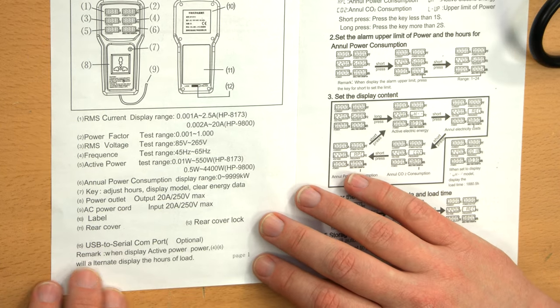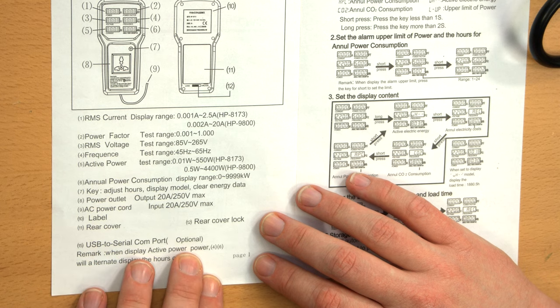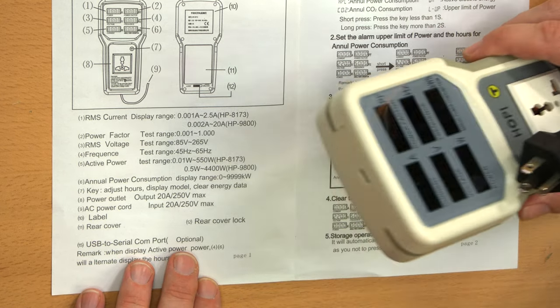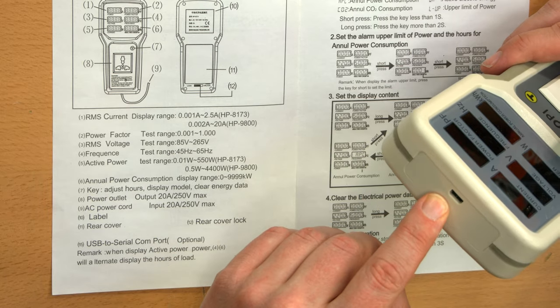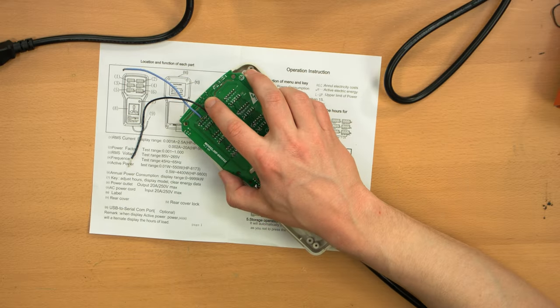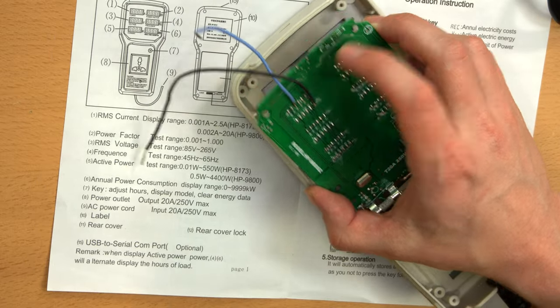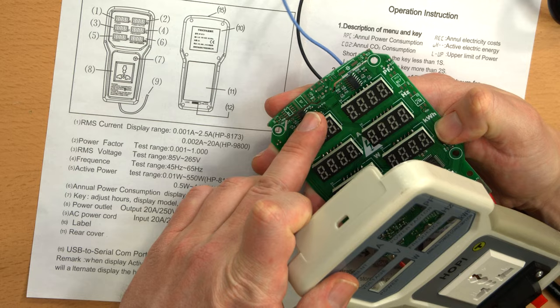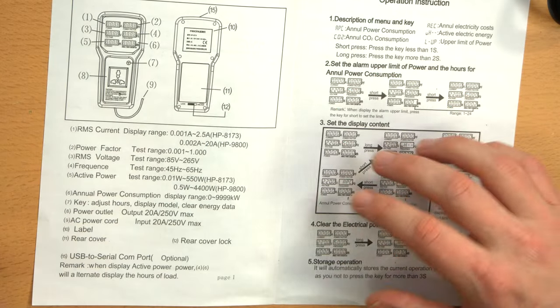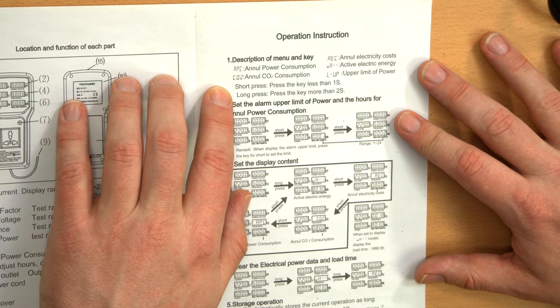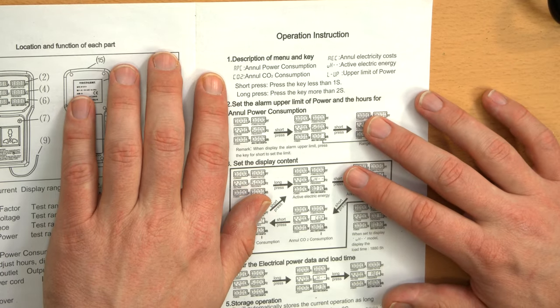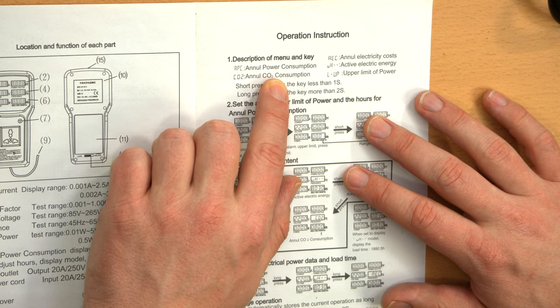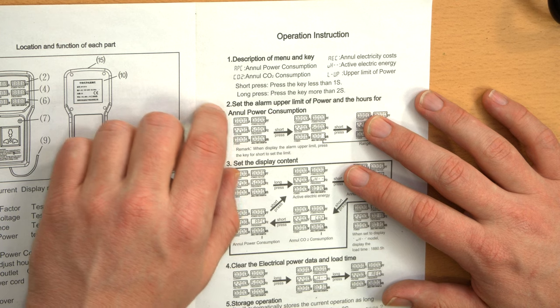Here's something I didn't discuss. It says USB to serial comport optional. None of these three devices have a USB port. They all have a hole for USB port. At least one of them on the listing on AliExpress said it had a USB port and was USB compatible. None of these do. In fact, even the one I took apart, this is where the USB port should be. There's space for it. There are solder pads for it, but it is absent.